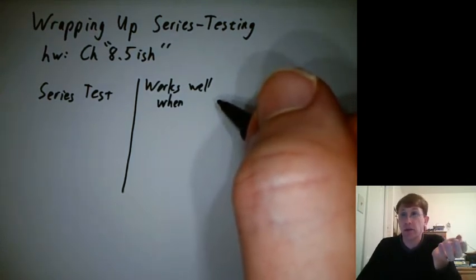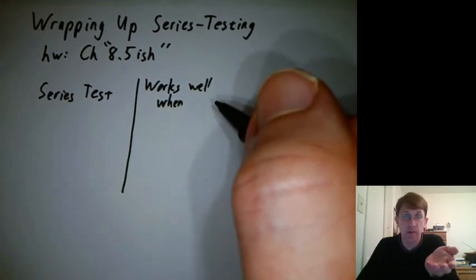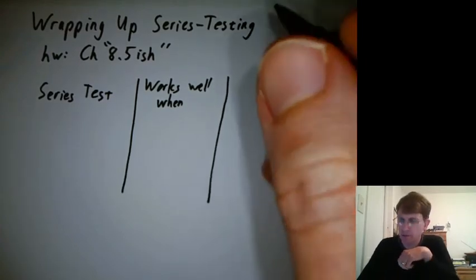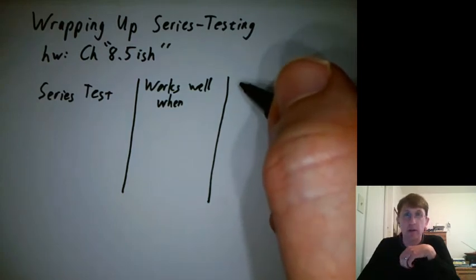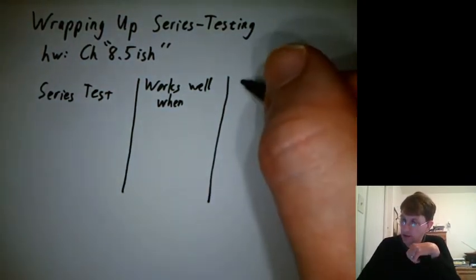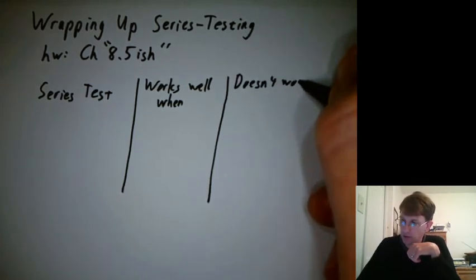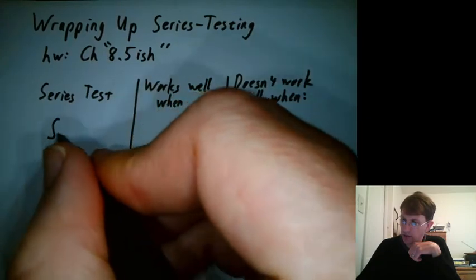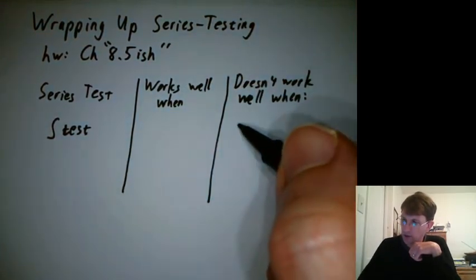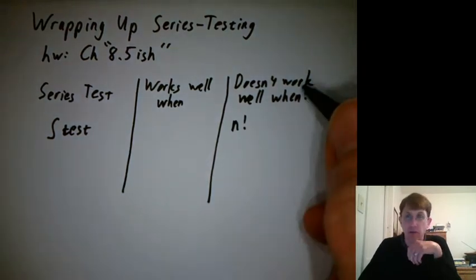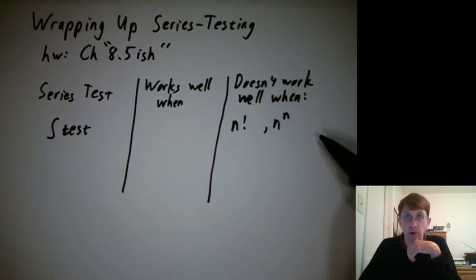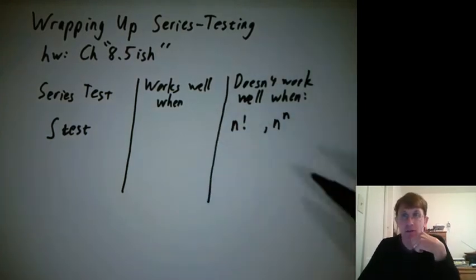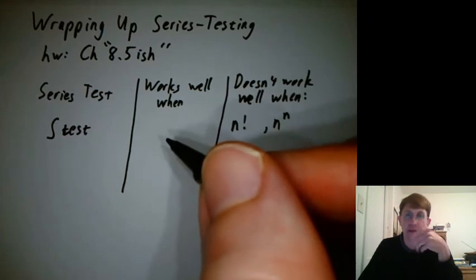So like an integral test, I would not want to do with a factorial in there because factorials are basically impossible to integrate. I'm going to say at the calc 2 level, but even after calc 2, factorials are a pain to integrate. And so if I said the integral test here, I would have another category that says doesn't work well when. So like if I said integral test doesn't work well when you have an n factorial, we also don't know how to integrate n to the n. That's even worse than n factorial. When does the integral test tend to work well? When it's easy to integrate. Maybe that goes without saying.